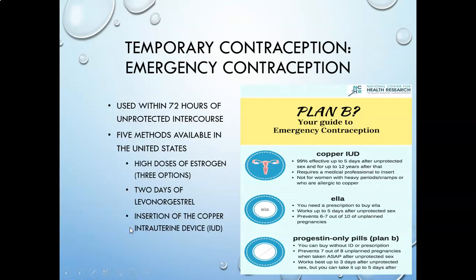Many people think of Plan B or emergency contraception as an abortion — it is not. It is not an intentional forced loss of pregnancy. It must be taken within 72 hours of unplanned intercourse. What it does is make the uterus inhospitable so that if an egg gets fertilized, it's kept from attaching to the wall — just like your body would naturally do. It is not killing a fetus; it just prevents implantation.